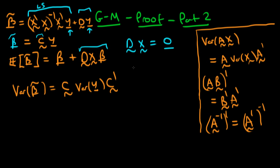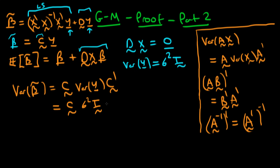Assuming homoskedasticity, the variance of y equals σ²I — some constant times the identity matrix. Under this assumption the variance becomes C times σ²I times C', and since I times C' just yields C', and σ² is a constant, we can write this simply as σ² times C times C transposed.